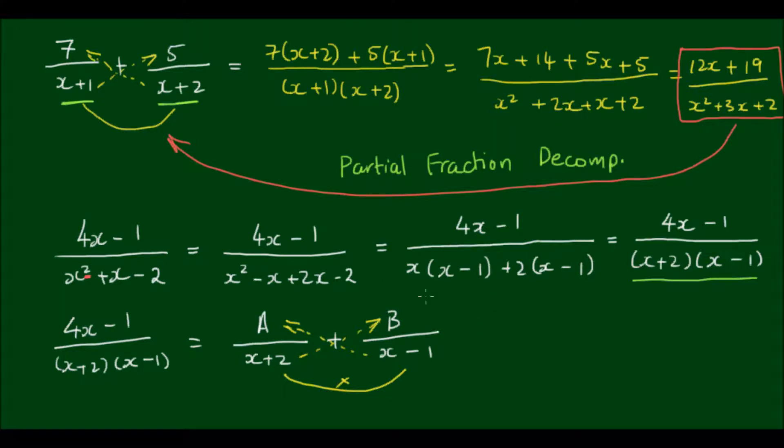So this gives me on the bottom (x+2) times (x-1), and on the top it gives me A outside of (x-1) plus B outside of (x+2).